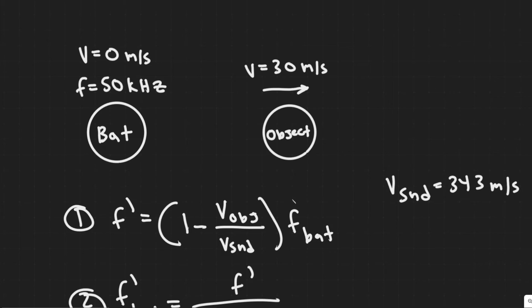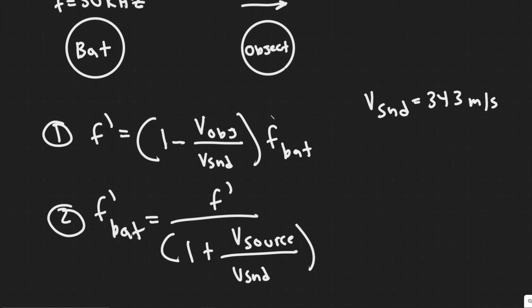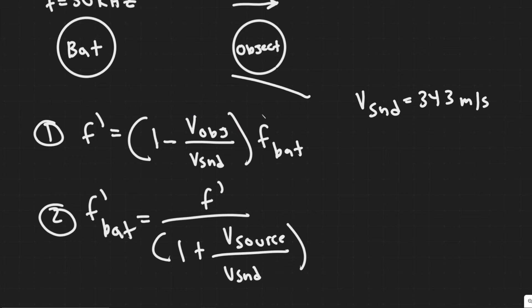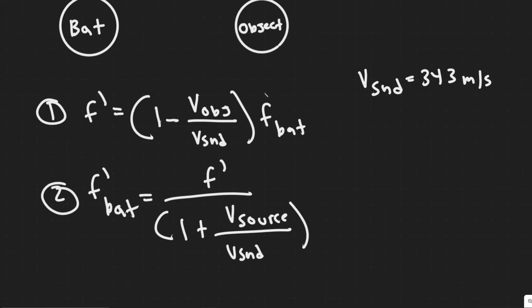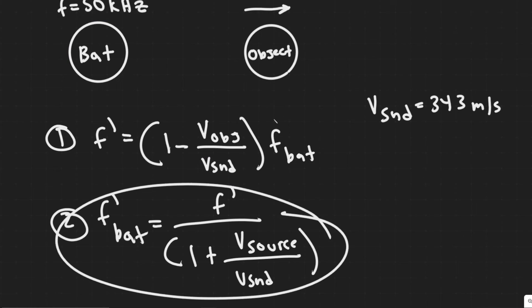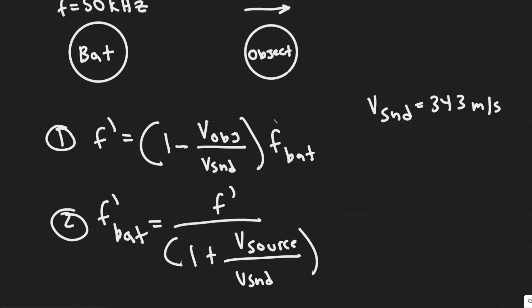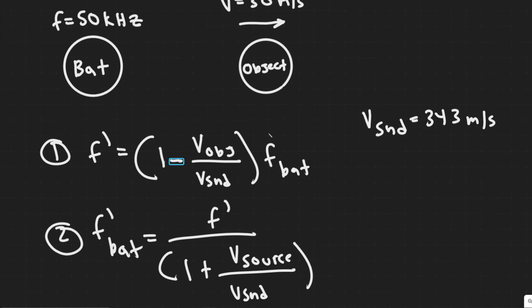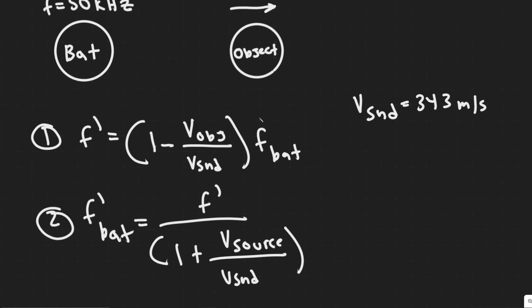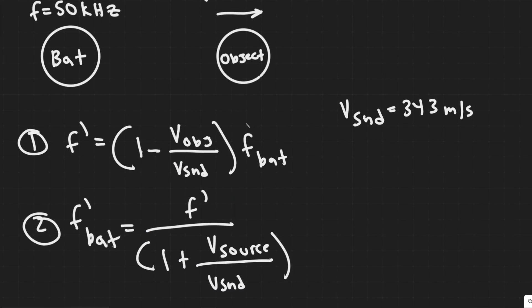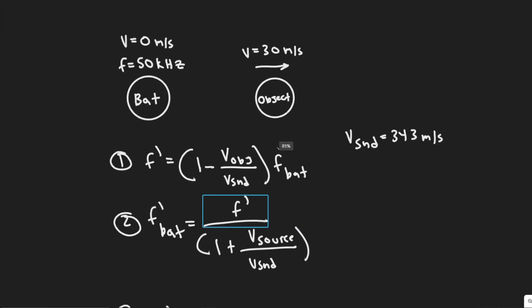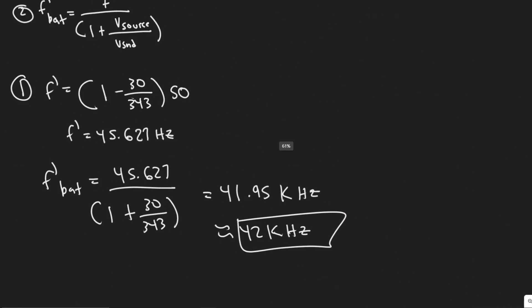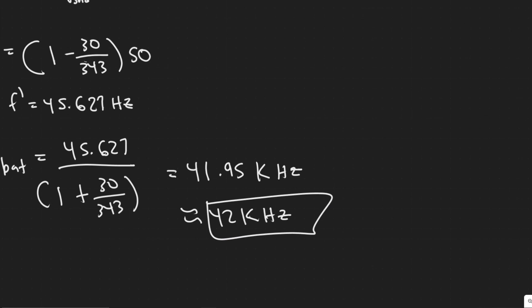The main takeaway is understanding the Doppler effect formulas: if you're trying to find the frequency received by an object from a stationary source, you use the first formula. If you're trying to find the frequency received by a stationary object from a moving source — which is the bat's case — you use the second formula. Change the plus or minus signs depending on whether the source is moving towards or away from you. For moving away, use minus in the first formula to decrease frequency, and plus in the second formula to make the value smaller. So 42 kilohertz is your final answer.